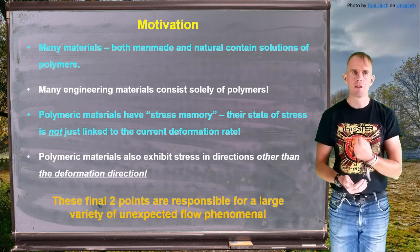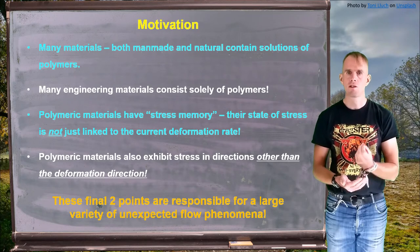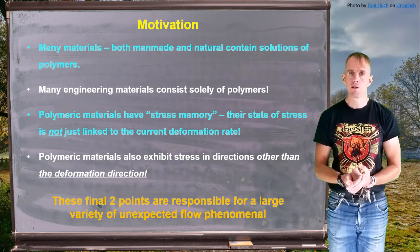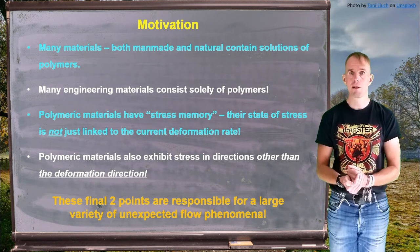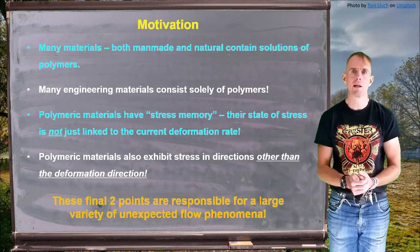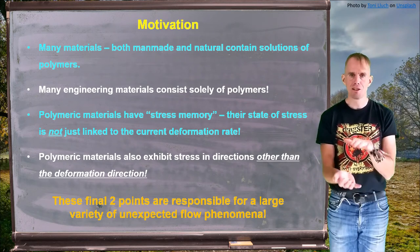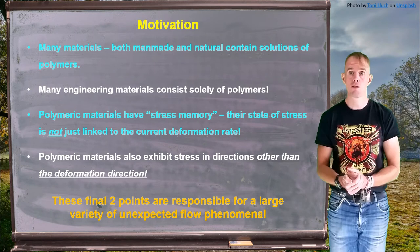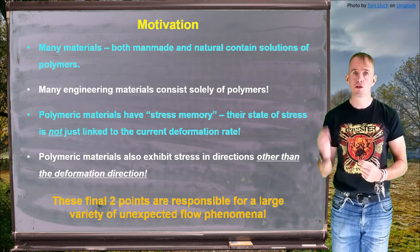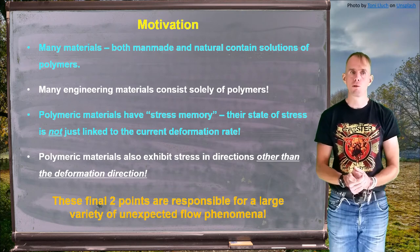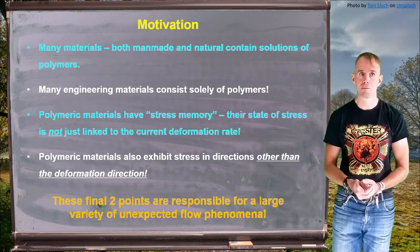There is a second thing that polymeric materials exhibit, and that is the direction in which the stress exists. For most materials, we would expect the stress to be in the direction of the deformation — that's how a Newtonian material behaves. However, in a polymeric material, we will also see that stress can be exhibited normal to the deformation direction. This stress memory and the presence of normal forces are responsible for a large variety of very unexpected flow phenomena in viscoelastic materials.